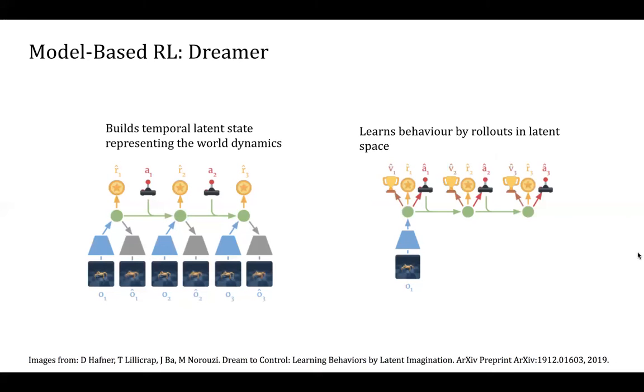As an instance of MBRL agents, we use DREAMER. DREAMER is a state-of-the-art model-based RL algorithm. DREAMER builds the world model represented as a variational autoencoder with a temporal latent state. To learn behavior, DREAMER uses virtual rollouts with a learned dynamics transition model.